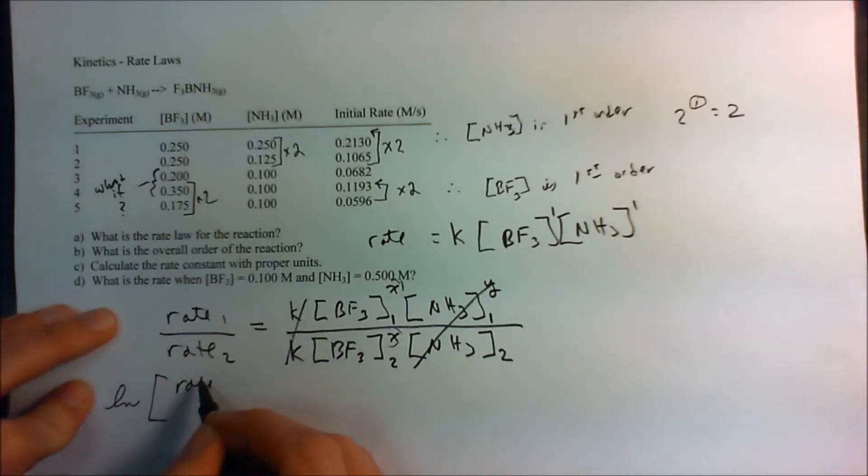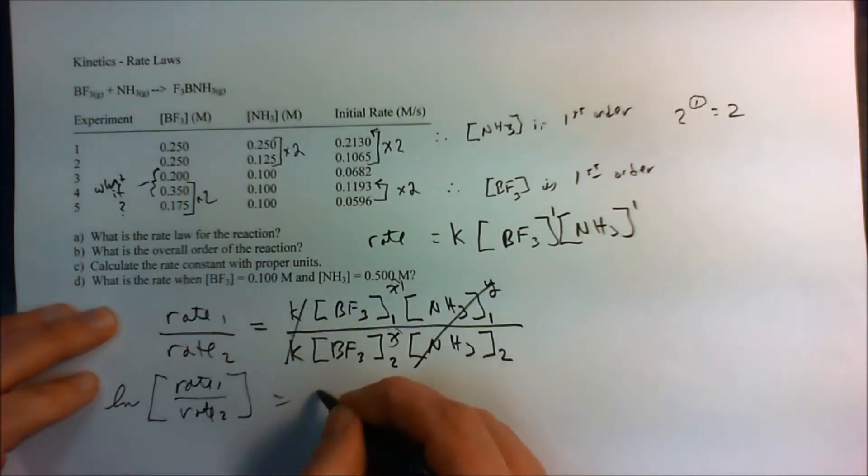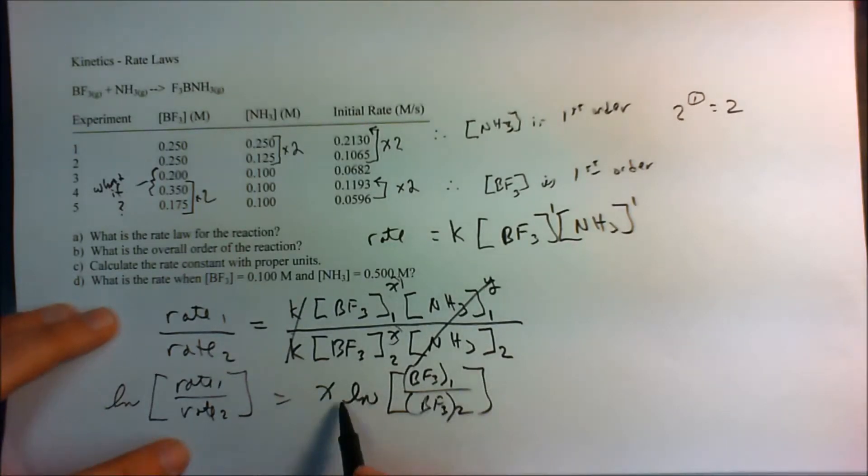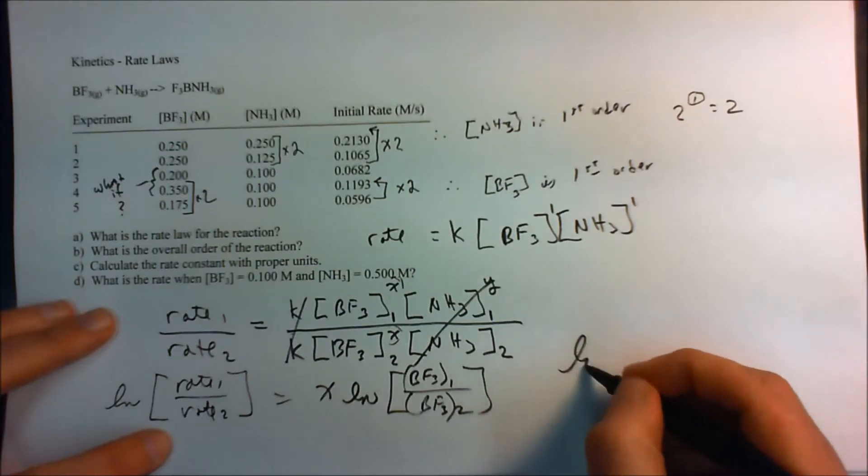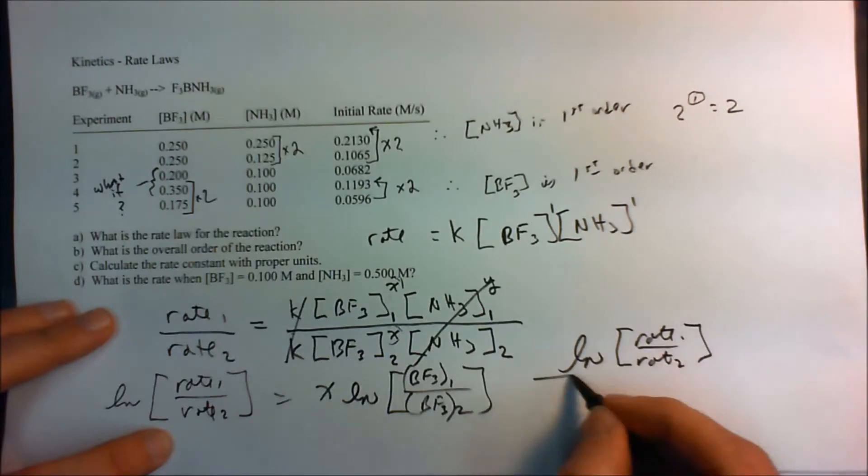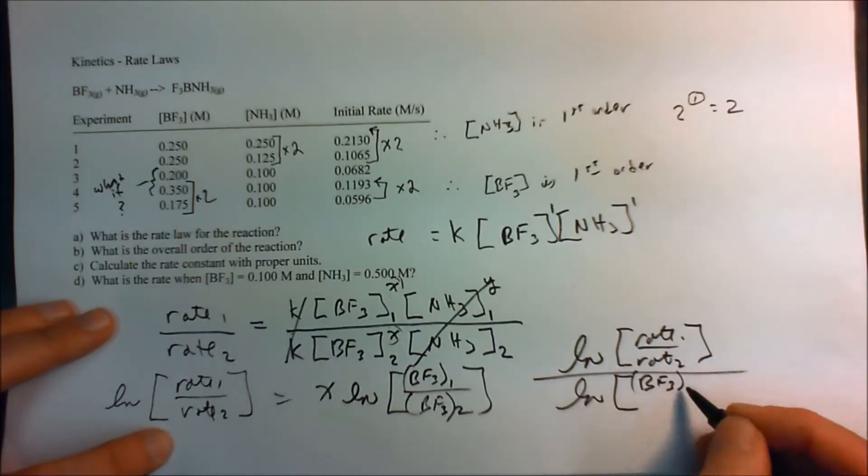If we take the natural log of both sides, we go ln rate 1 over rate 2. And by taking the natural log of this side, we pull out the X in front of the natural log. So this is X times the natural log of your boron trifluoride concentrations, the first one and the second one. And then if we solve it now, we can just solve for X. And it's ln of rate 1, rate 2, divided by ln of the first set of concentrations divided by the second set of concentrations.